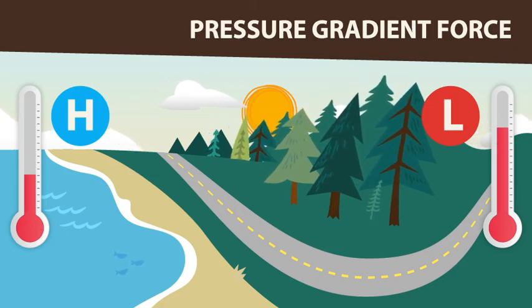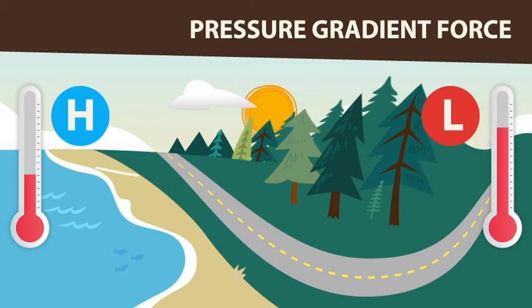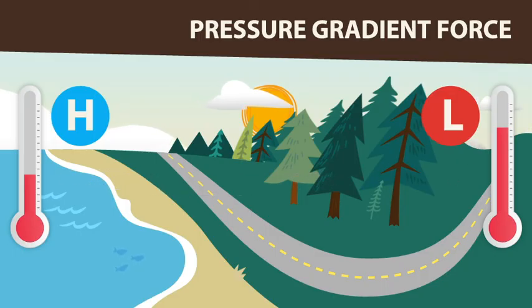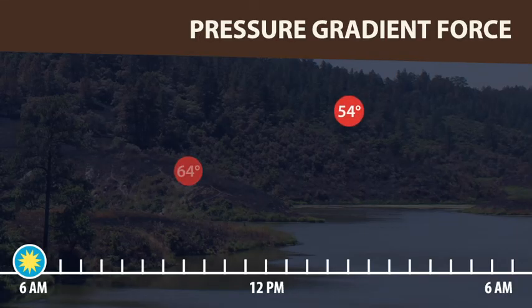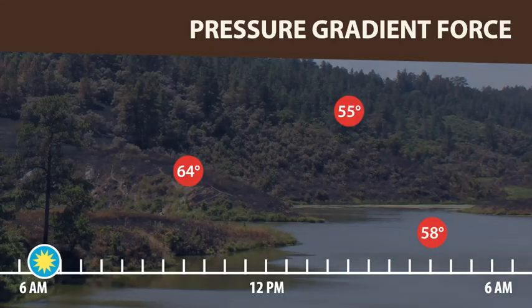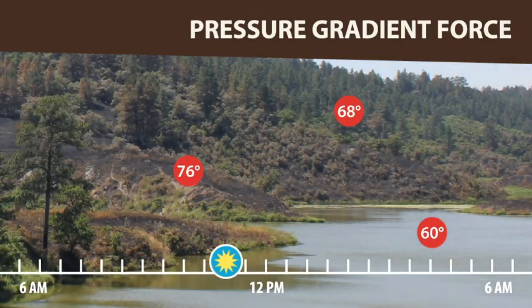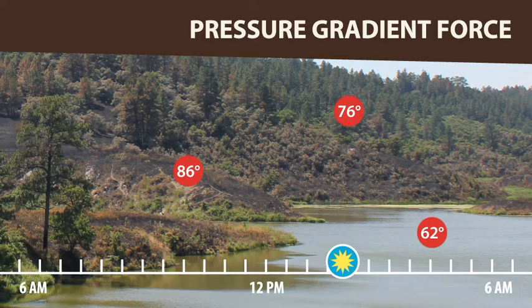Hot surfaces tend to create areas of lower pressure and cooler surfaces tend to create areas of higher pressure. Because the Sun heats the Earth unevenly based on sun angle and surface characteristics, there is always going to be a spectrum of temperatures on the Earth's surface and therefore a spectrum of pressures that lead to pressure gradients.